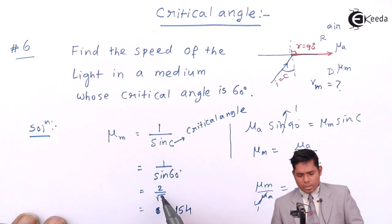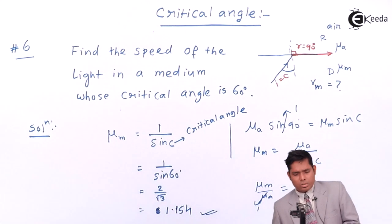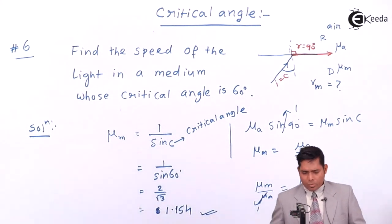You solve it, you get it. Because 2 is there, 1 by root 3, root 3 is 1.73, then you take the reciprocal, it is 0.866, that goes up. So you get 1.154. This is the refractive index. Now you have to find the speed.